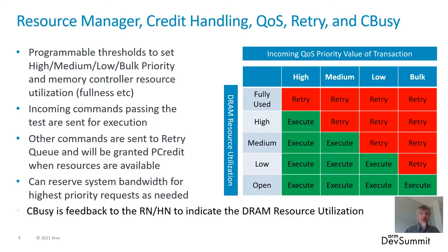This allows you to reserve memory bandwidth — something you may typically want to do in a system with a lot of video transactions. Video processing can be very greedy and start consuming bandwidth when other things need it, even if that video data doesn't necessarily need to be processed at that moment. So you can hold off a noisy but low-importance requester to reserve bandwidth for the highest priority requests. The C-busy response provides feedback to the requester or home node indicating how busy the DRAM resource is, so they can adjust their bandwidth accordingly.